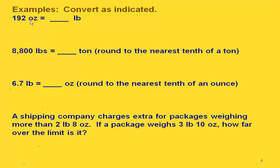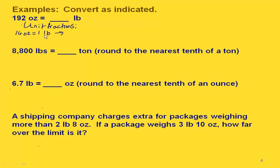If we have 192 ounces and we want to convert it to pounds, here again is where we're going to use our unit fractions. We want a fraction that's going to relate the two units we're looking at. We're looking at the fact that 16 ounces equals one pound, and then we want to write a fraction using these two quantities. Our original unit is the one we want on the bottom, and the unit we're converting to is the one we want on the top. So the unit fraction we would use would be one pound over 16 ounces.